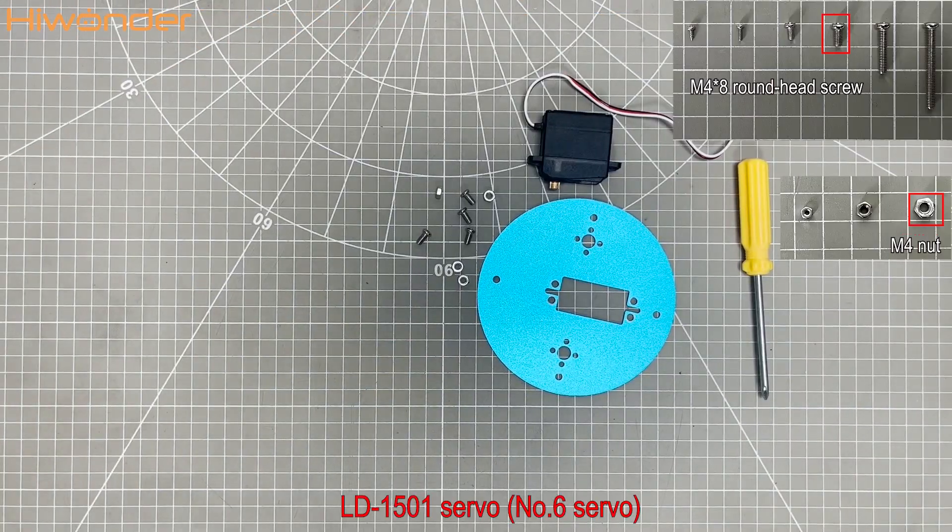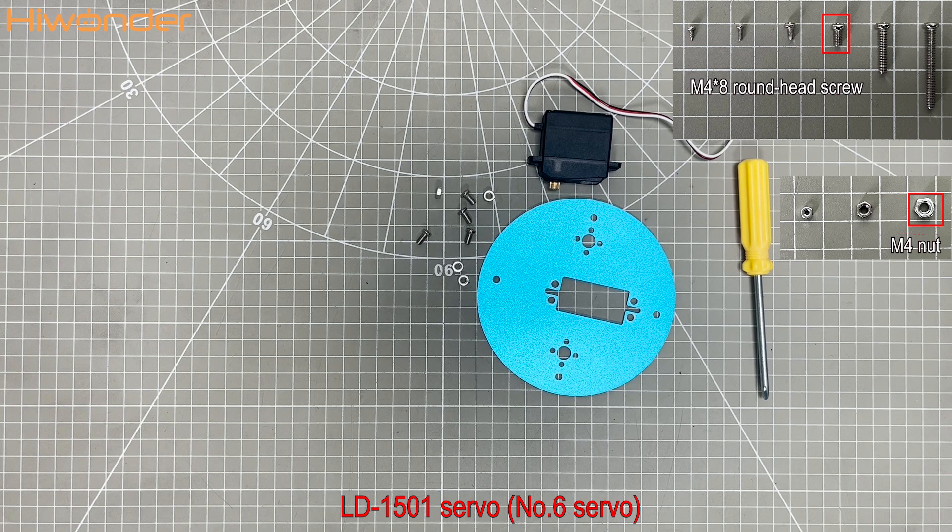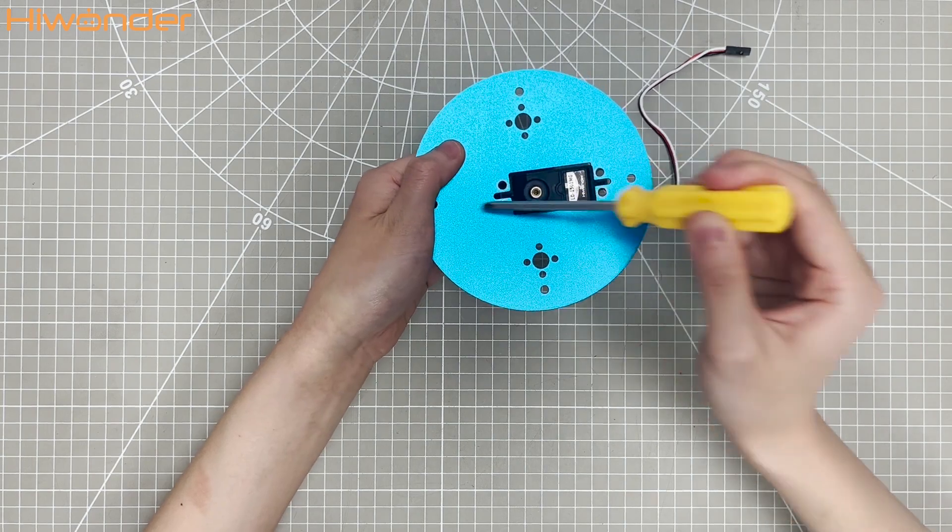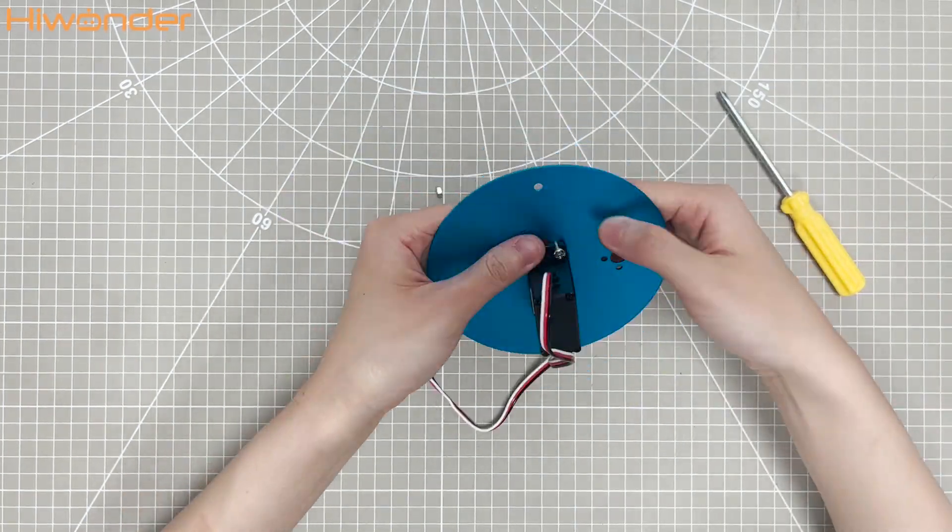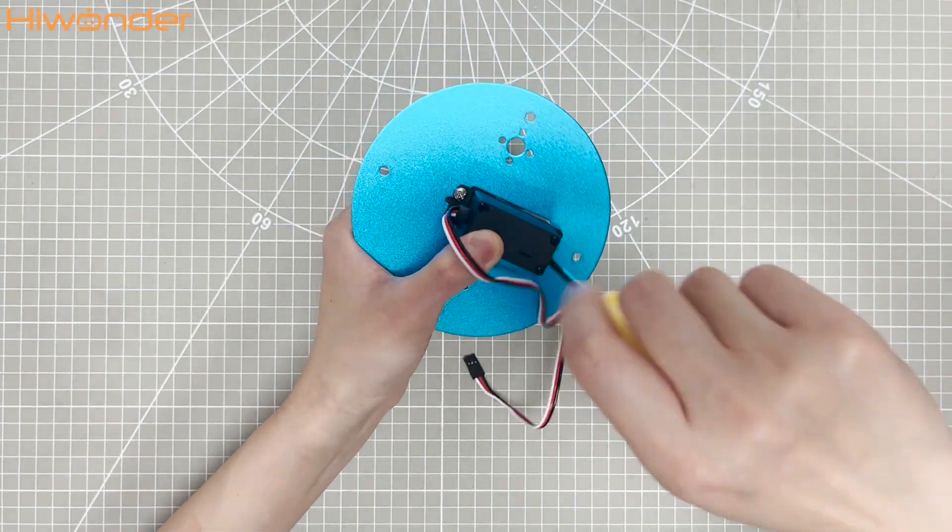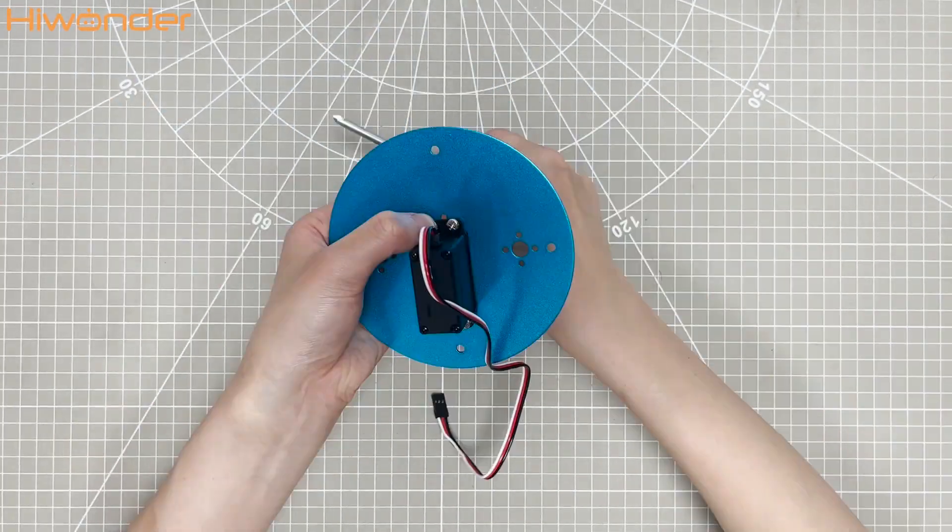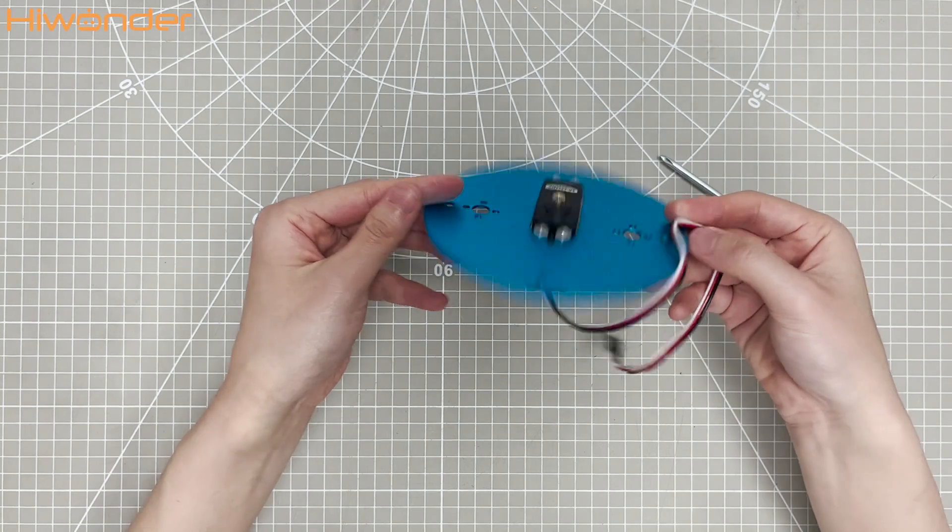Now let's attach the LD1501 servo to the big round bracket. The servo gear should be at the center of the round bracket.